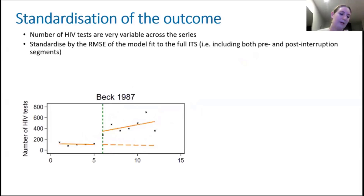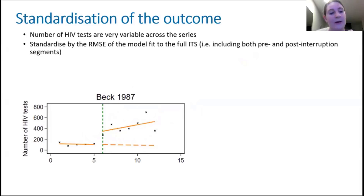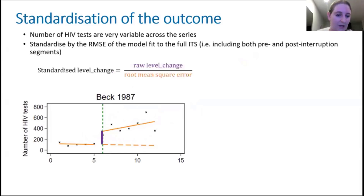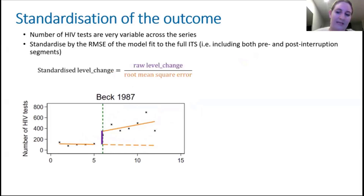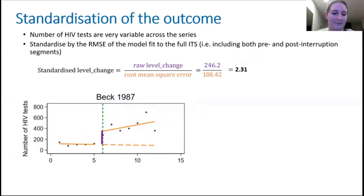In our example with one ITS study looking at the number of HIV tests, we standardize by the root mean square error of the model fit to the entire series. We fit the model to our ITS data, extract the effect of interest — in this example the level change — and then divide by the root mean square error from that ITS model. We get something like this as our standardized effect estimate.